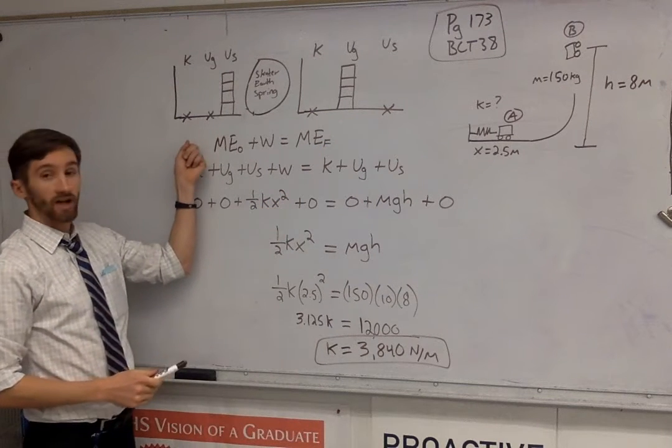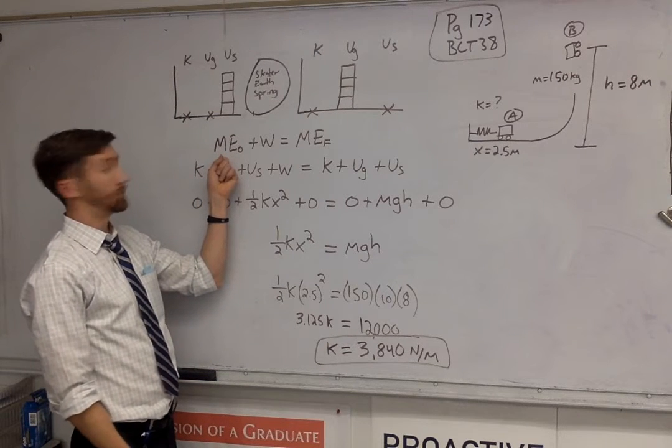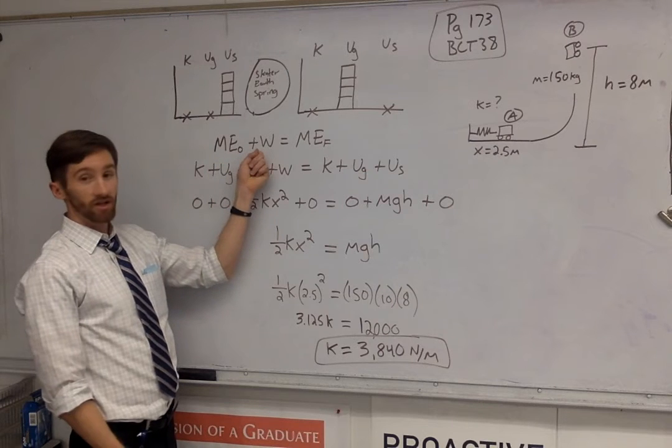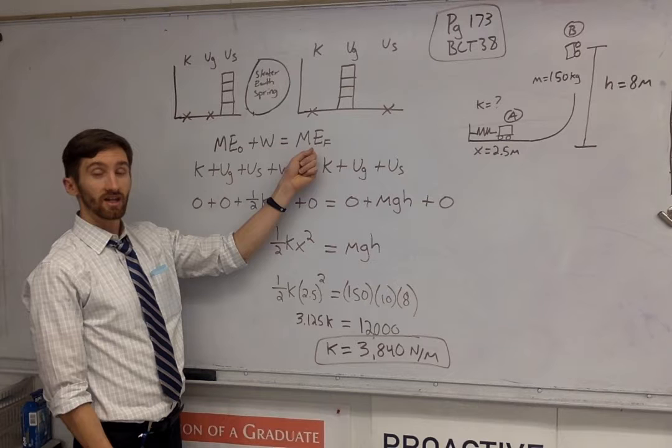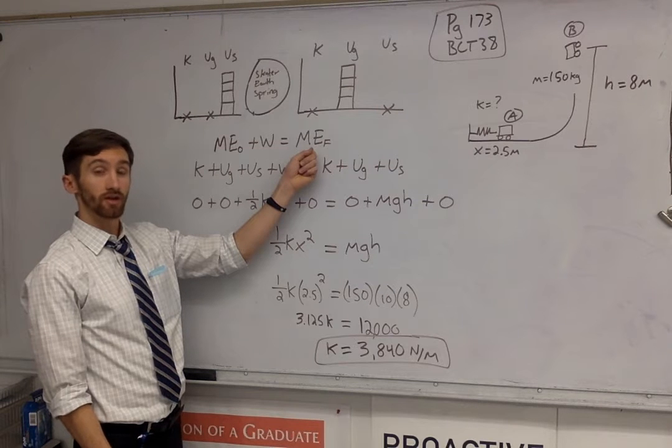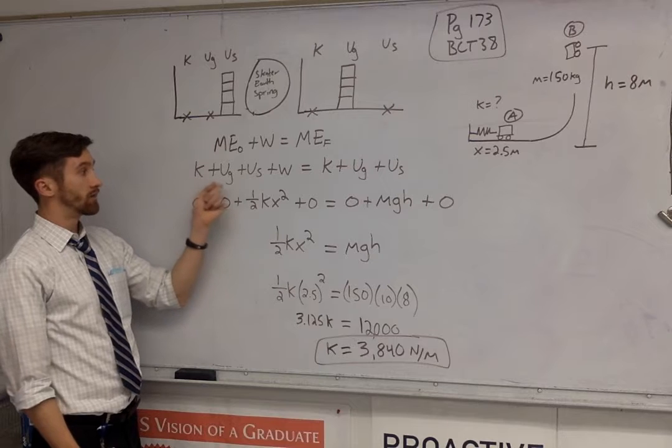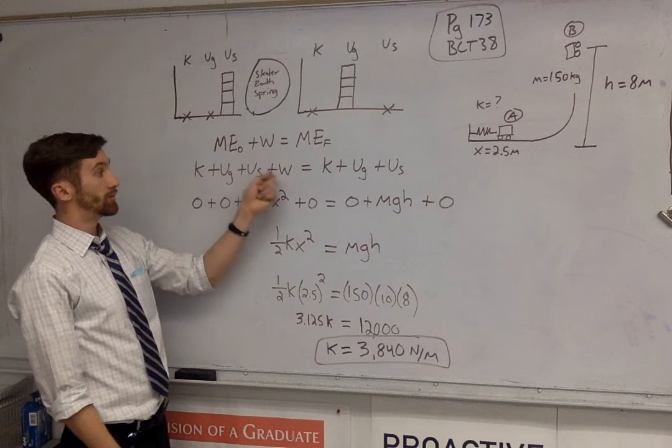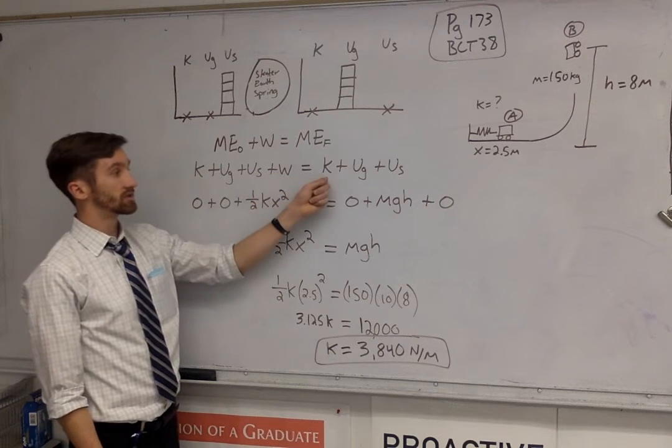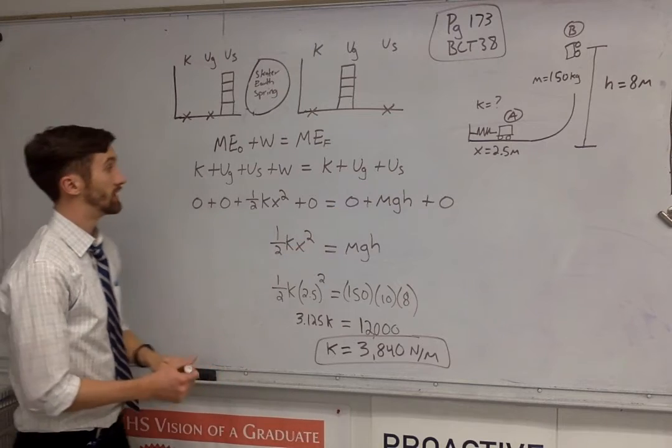I'm going to start next with my equation. The mechanical energy, or the total energy before, plus any work that happens in the middle, equals the mechanical energy, or the total energy at the end. Mechanical energy is kinetic, plus gravitational potential, plus spring potential, plus the work, equals kinetic, plus gravitational, plus spring at the end.